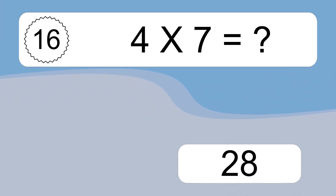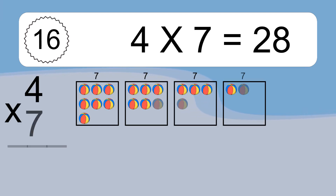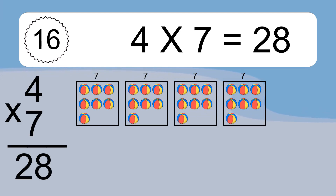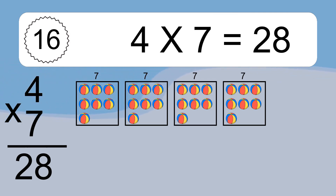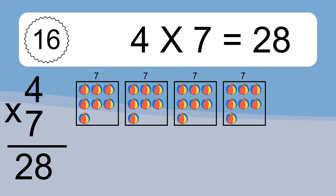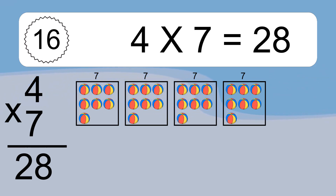4 times 7 equals what? We have 4 boxes and each box has 7 colorful balls inside. If you count all the balls in all the boxes together, you will have 4 times 7 balls. This equals 28 balls.